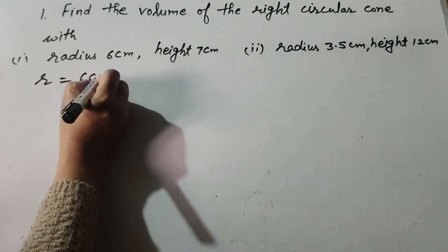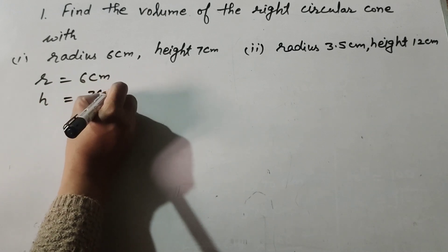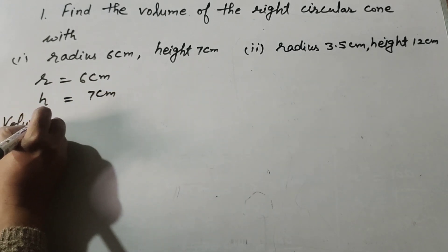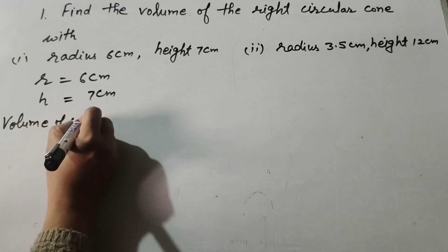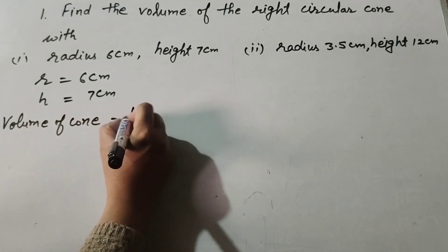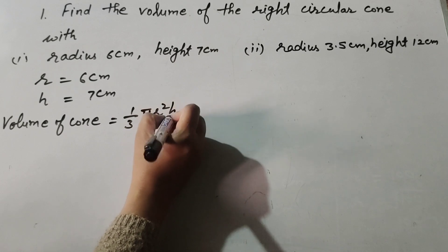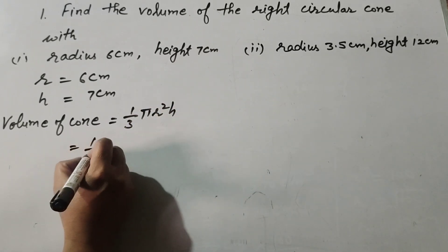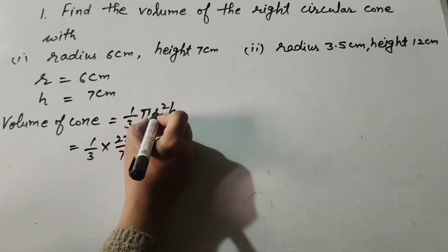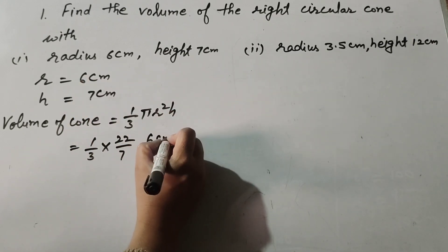In the first part, radius r is equal to 6 centimeter and height h is equal to 7 centimeter. We find the volume of the cone using the formula: Volume = 1/3 × π × r² × h, where π is taken as 22/7.